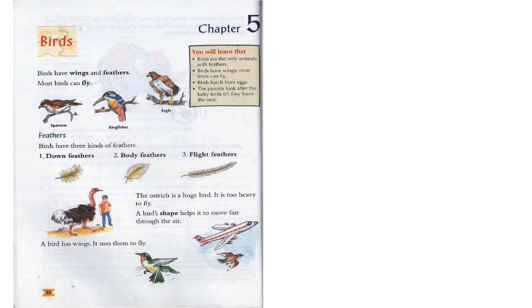The ostrich is a huge bird. It is too heavy to fly. If you look at the left part of the book there is a picture where a boy is smaller than an ostrich, which shows that the ostrich is a huge bird but cannot fly because it is too heavy. A bird's shape helps it to move fast through the air. There is a picture of an airplane and also a picture of a bird, and both of them look alike. Birds can fly like an airplane, and their shape helps them move fast through the air.